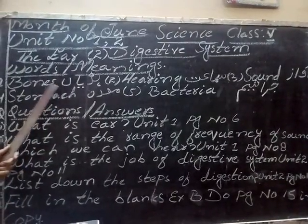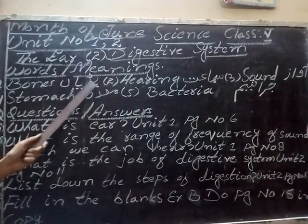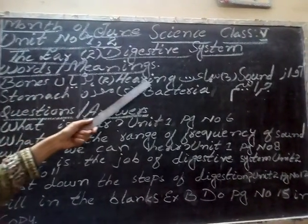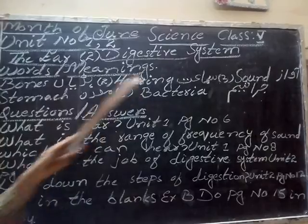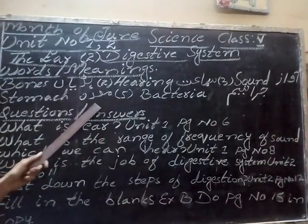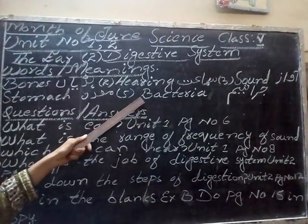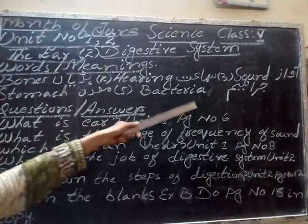What's meaning? Bones — Hattiyan. Hearing — Samas. Sound — Awaaz. Stomach — Medha. Bacteria — Jara-seem.